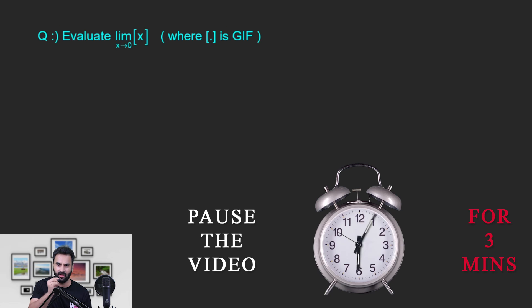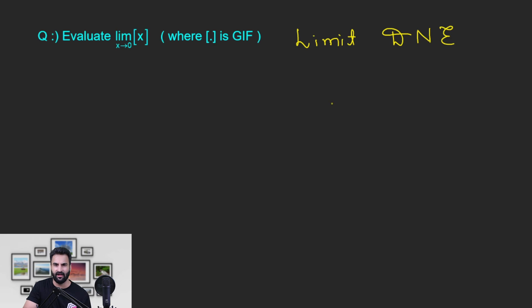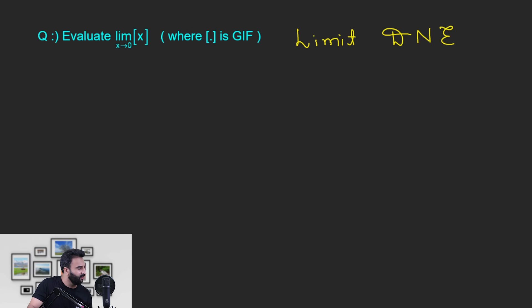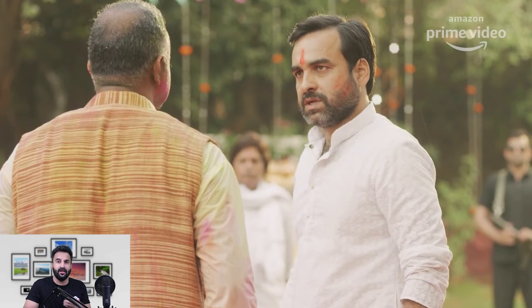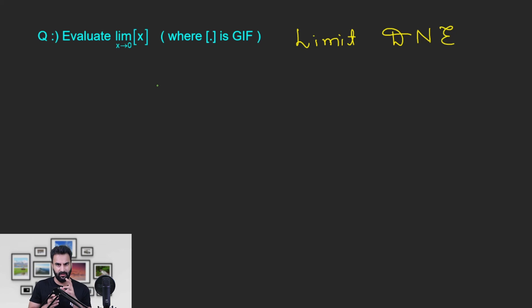इस question को solve करिए, 3 मिनट के लिए video को pause करके। Answer है: limit does not exist। देखें क्यों — यहाँ पर LHL और RHL अलग-अलग calculate करेंगे। यह जो greatest integer function होता है, यह एक ऐसा function है जो अपना रंग बदलता है integer पर। यह x tending to zero है — zero एक integer है — तो zero से कम पर इसका behavior अलग होगा और zero से ज्यादा पर इसका behavior अलग होगा।